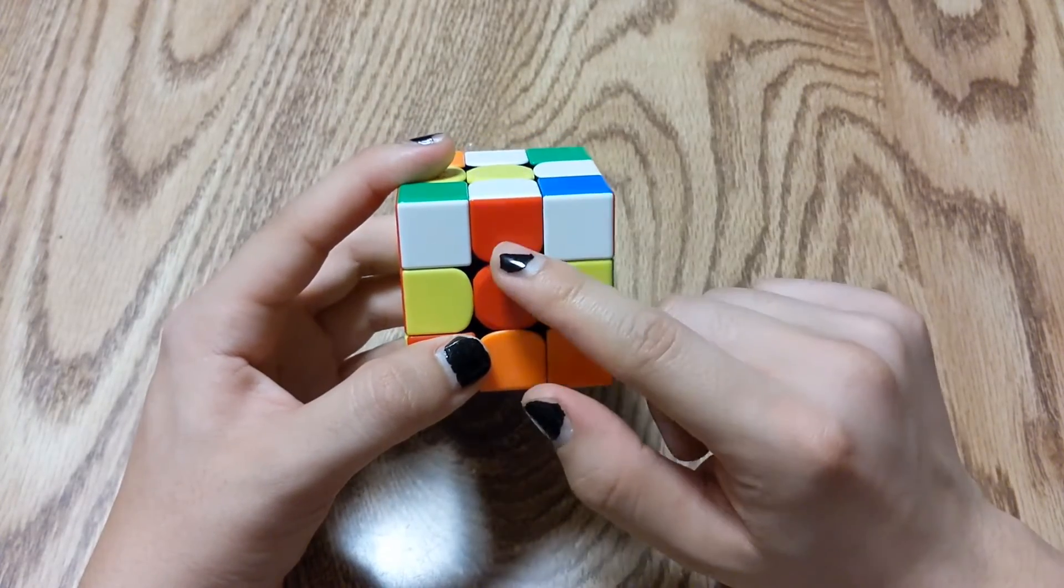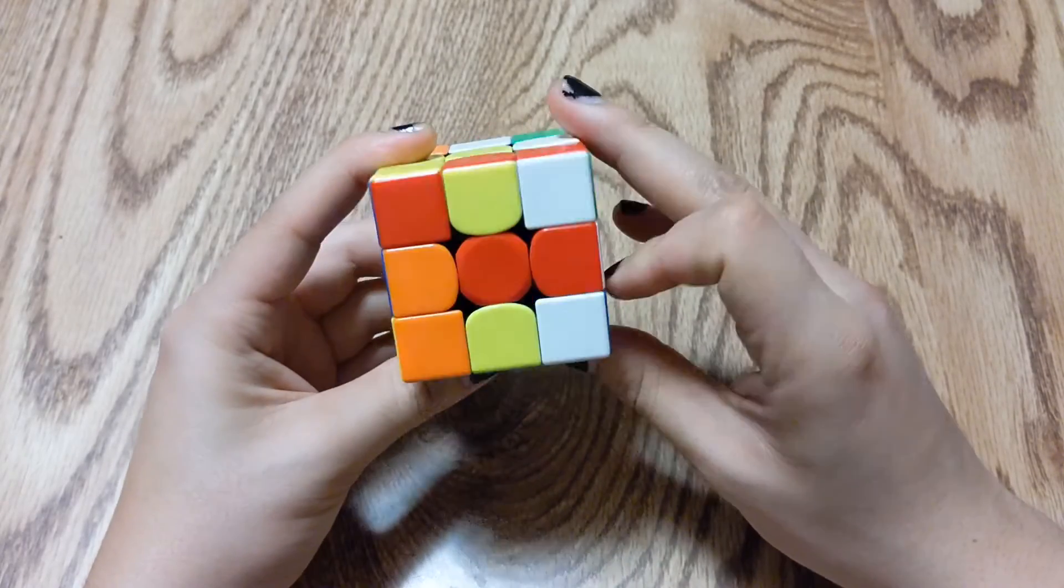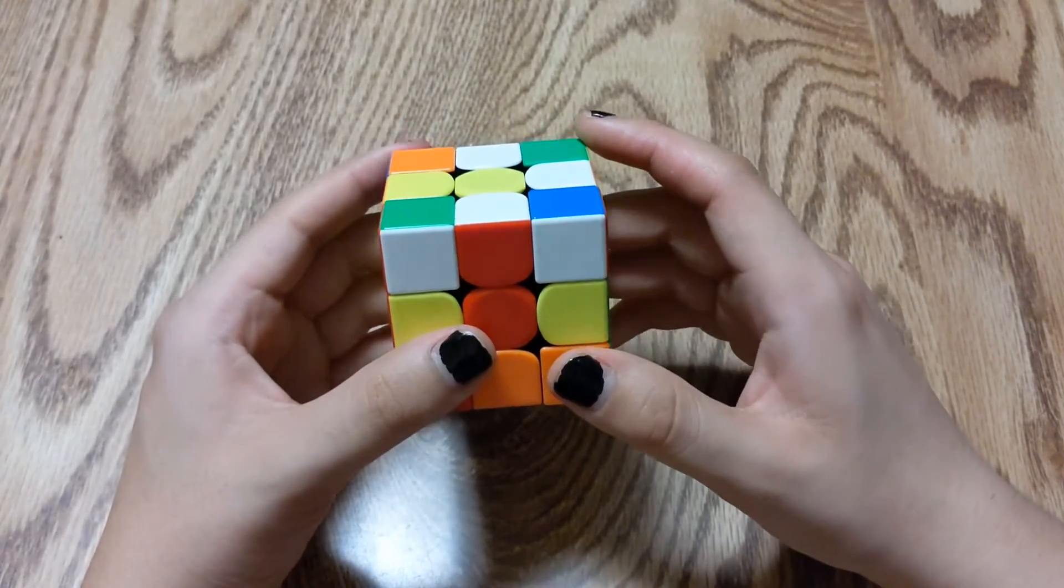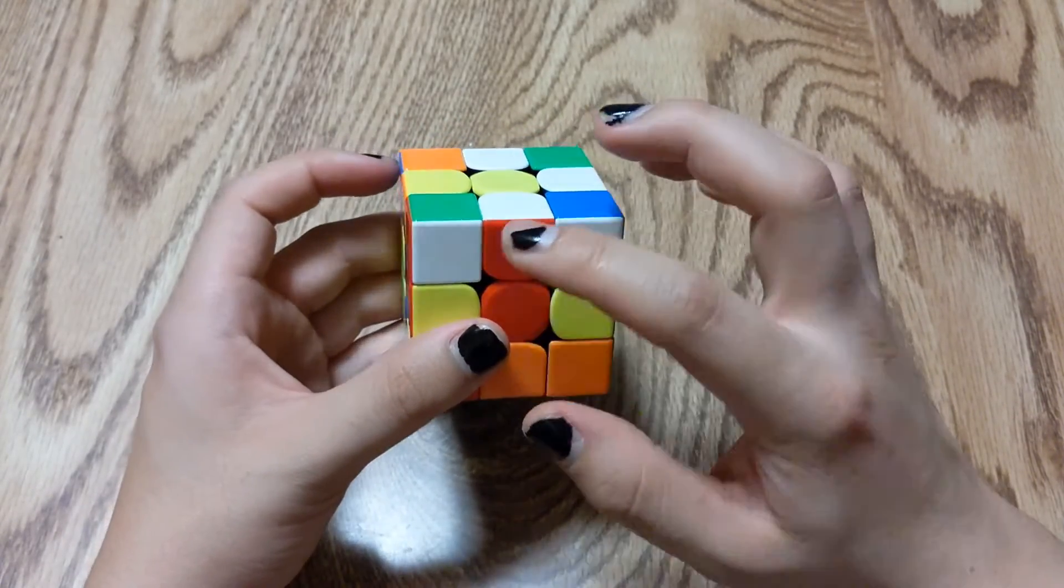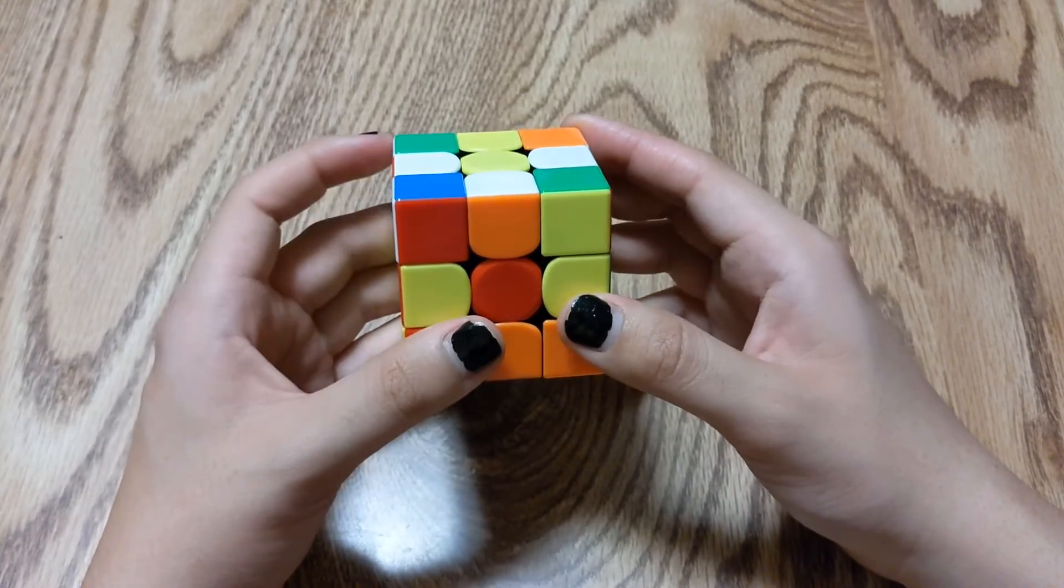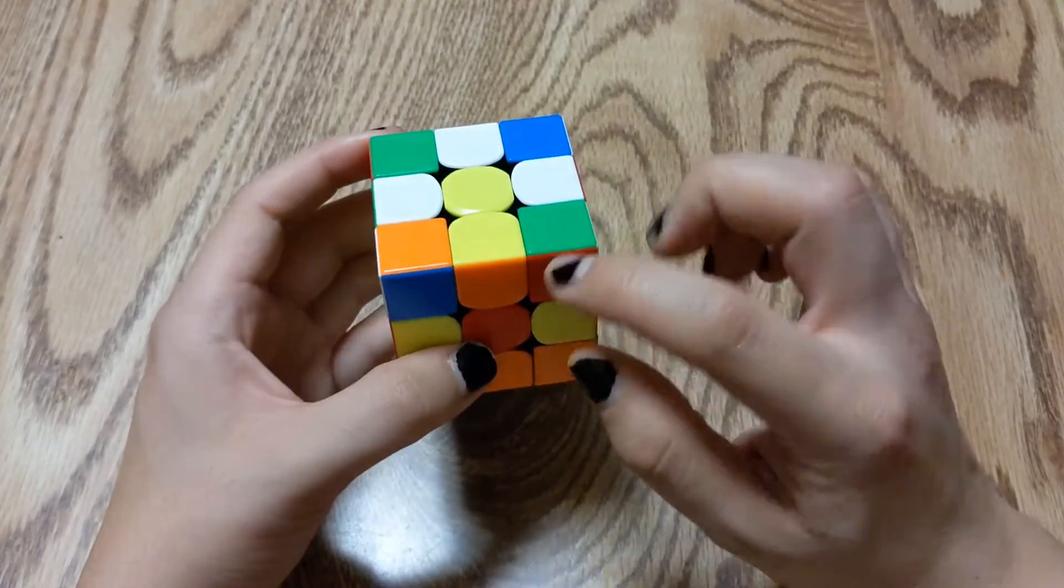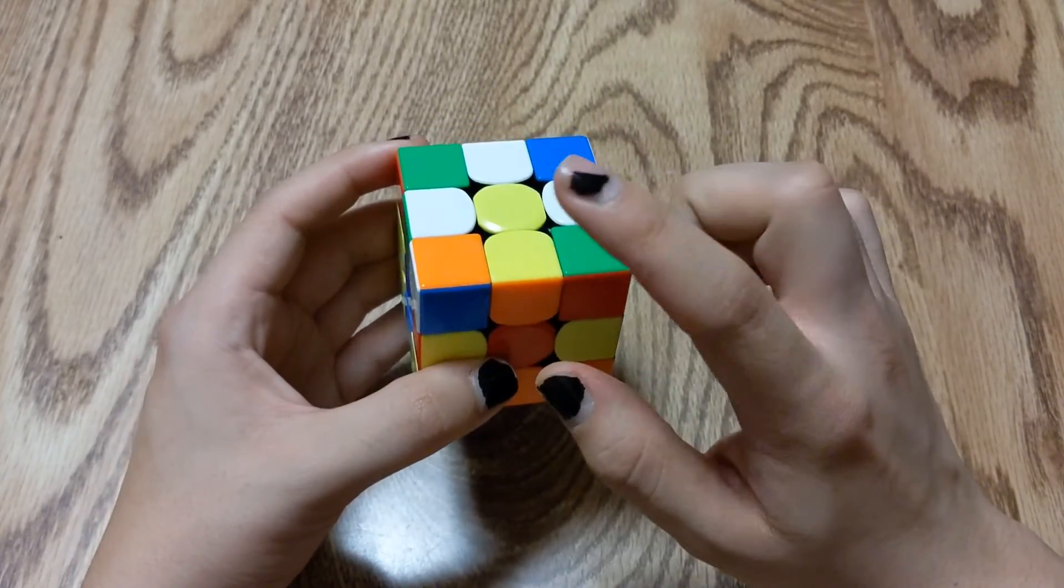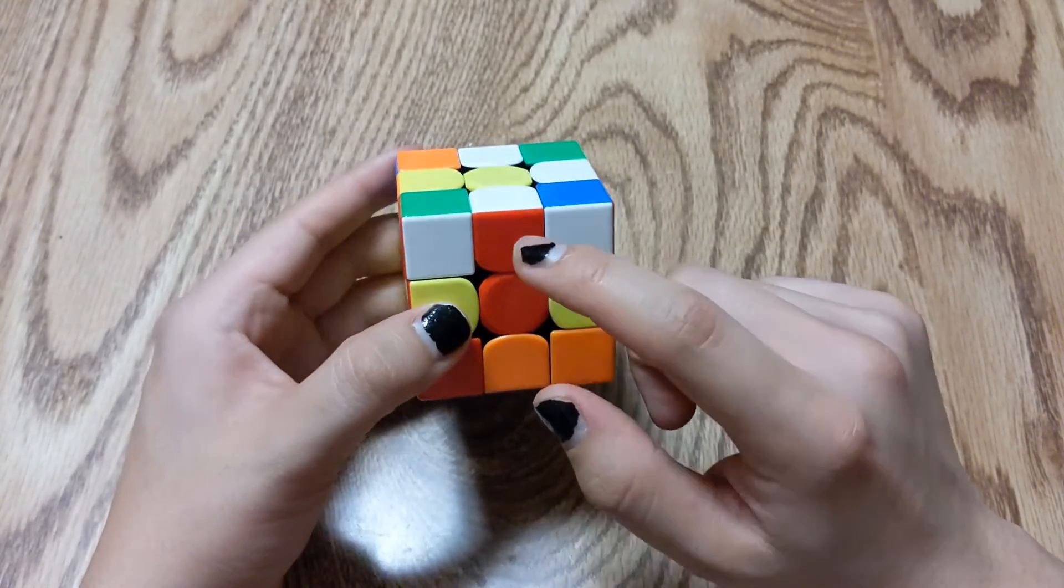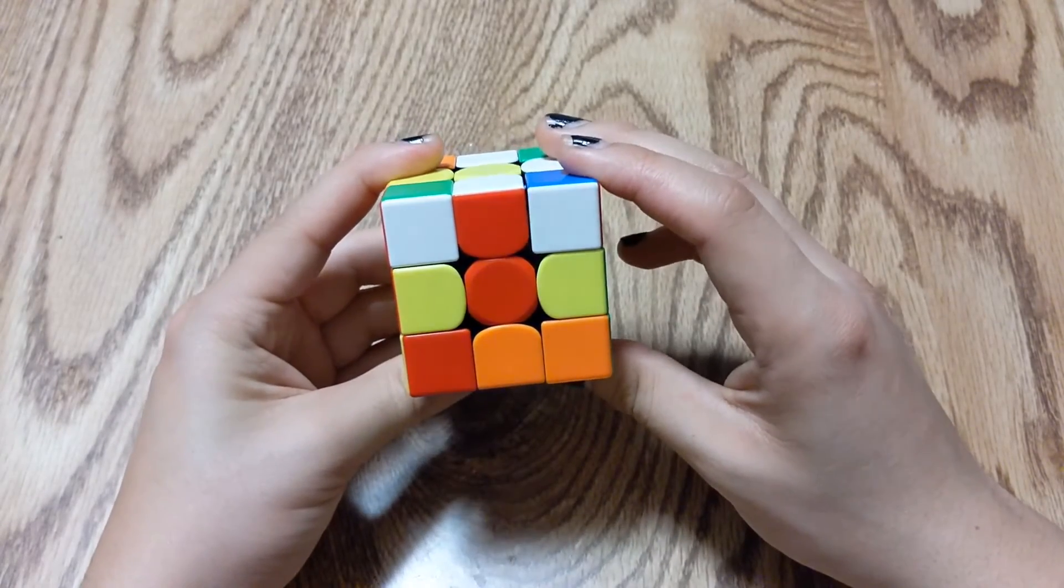Now, sometimes the edge piece might already match with the center. And you can bring that to the bottom. But for the purpose of this tutorial, I'm gonna move it away and cycle through the other colors. So this one doesn't match. This does not have white. And now the red center matches with the red edge piece. And we bring it down.